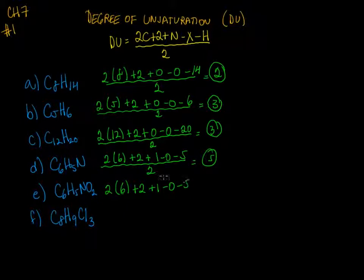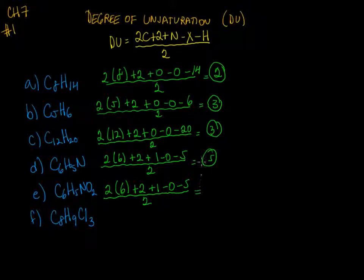Here there are six carbons again, add two, one nitrogen, zero halogens, five hydrogens, divide by two. Students sometimes ask me: where do I plug in the two for the oxygens? Oxygen is not in this formula at all, so just ignore it — leave it out.